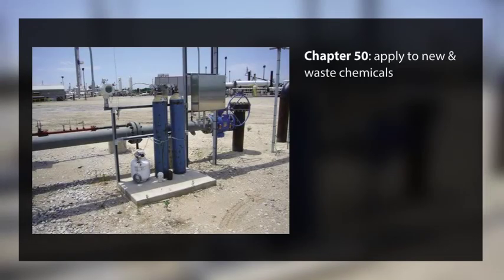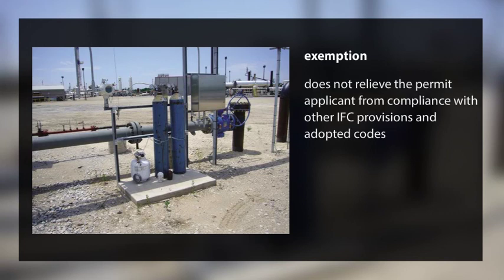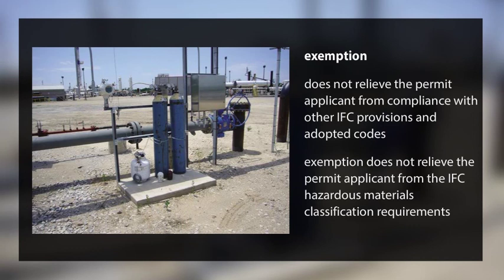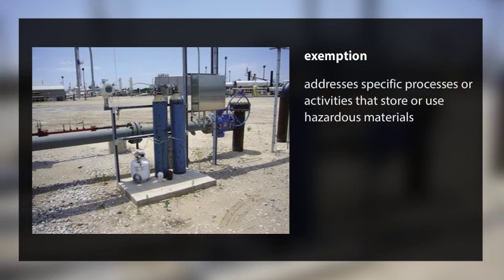The requirements in chapter 50 apply to new — that is, virgin or unused — and waste chemicals, including their transportation on the site where they are stored, used, handled, or dispensed. Certain processes are exempt from the chapter 50 requirements; however, exemption does not relieve the permit applicant from compliance with other IFC provisions and other adopted codes in the jurisdiction. Exemption also does not relieve the permit applicant from the IFC hazardous materials classification requirements. Off-site transportation is regulated by the US Department of Transportation and is exempt from IFC regulations.